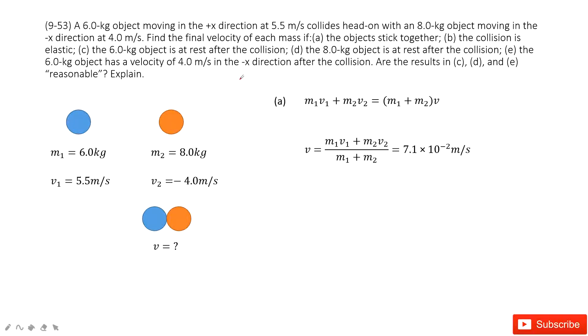Welcome to my channel. I'm Zhang Zingshu. Let's look at problem 53 in chapter 9. Chapter 9 is about linear momentum. In this one, you can see we have two boxes, or two objects, M1 and M2. The mass is given and also initial velocity is given. And in several situations, we need to find the final velocity.